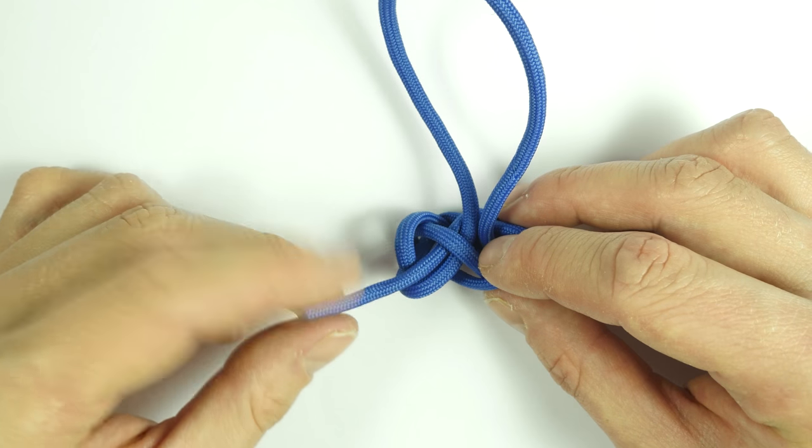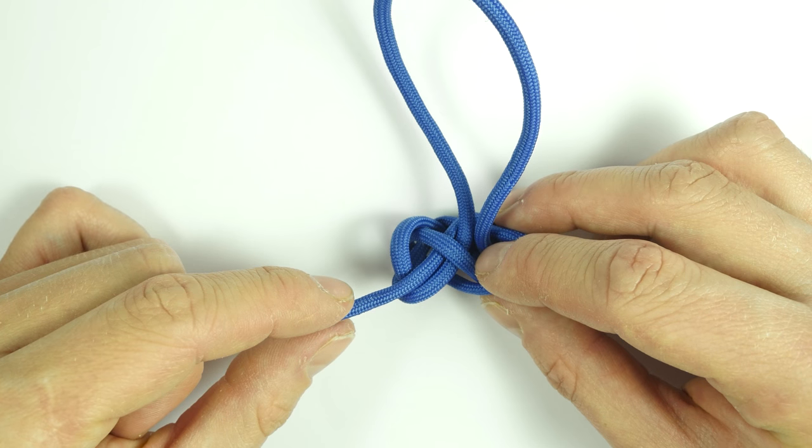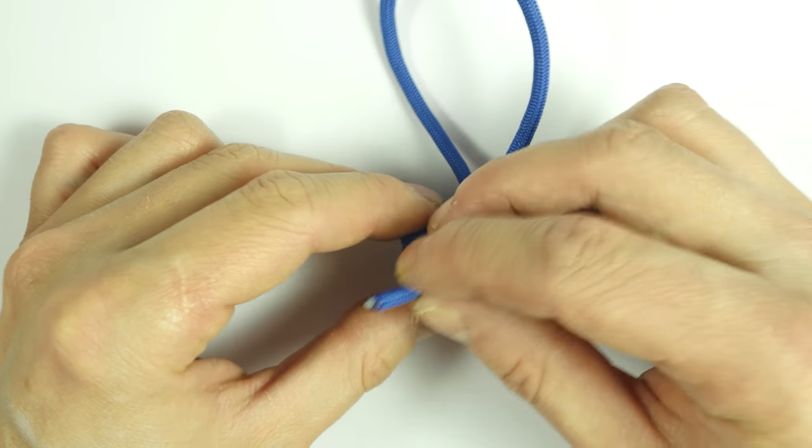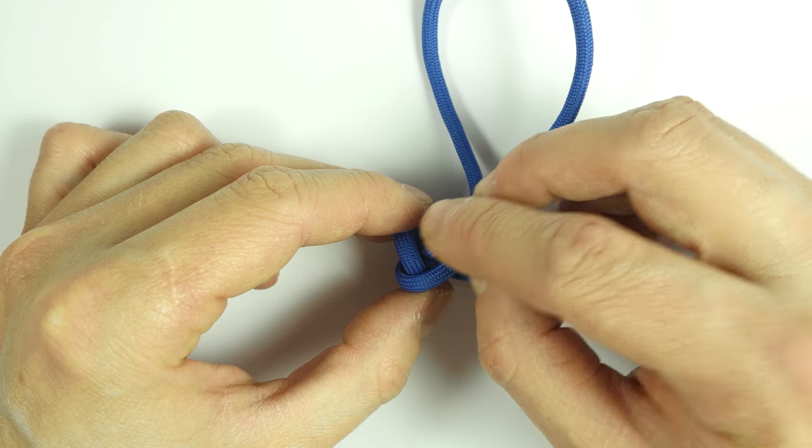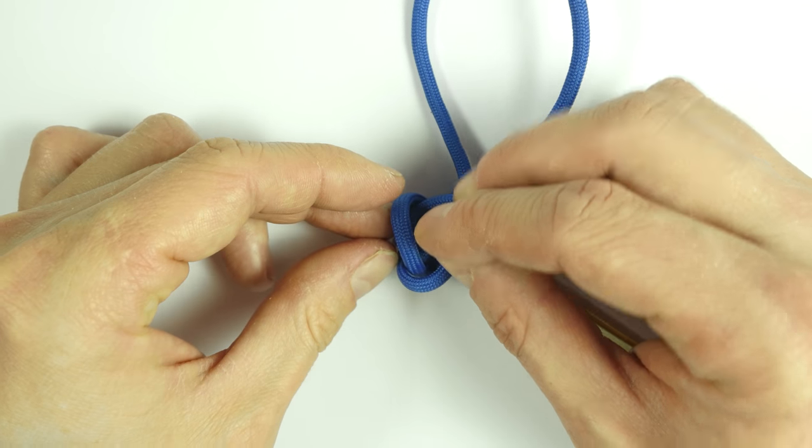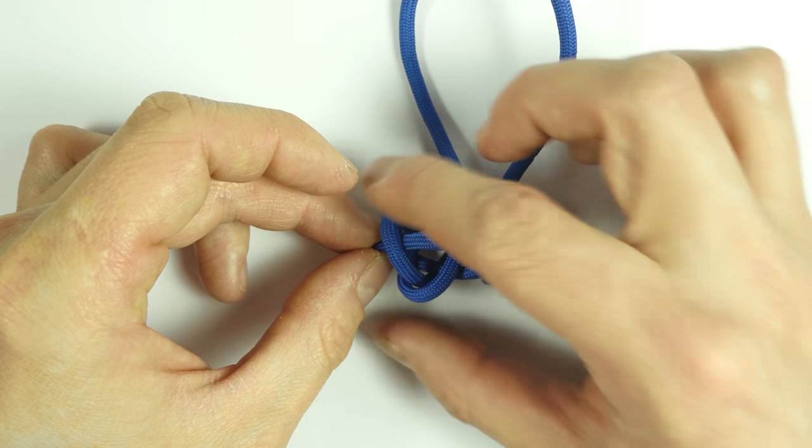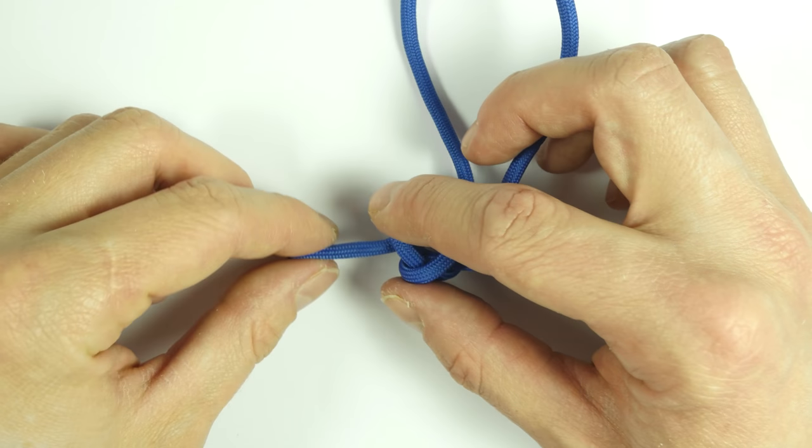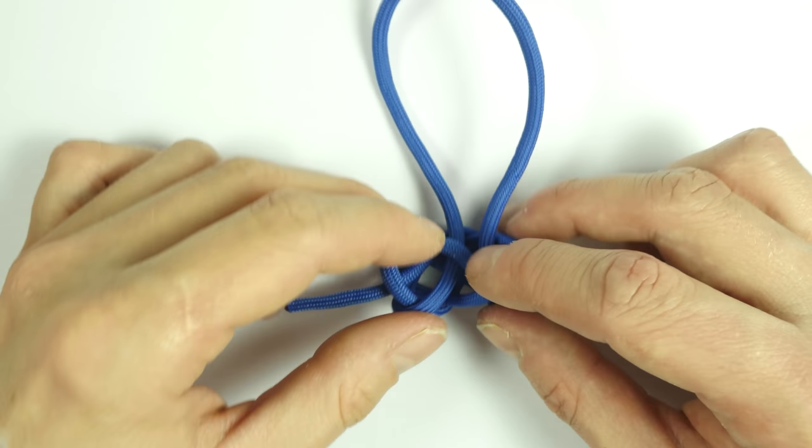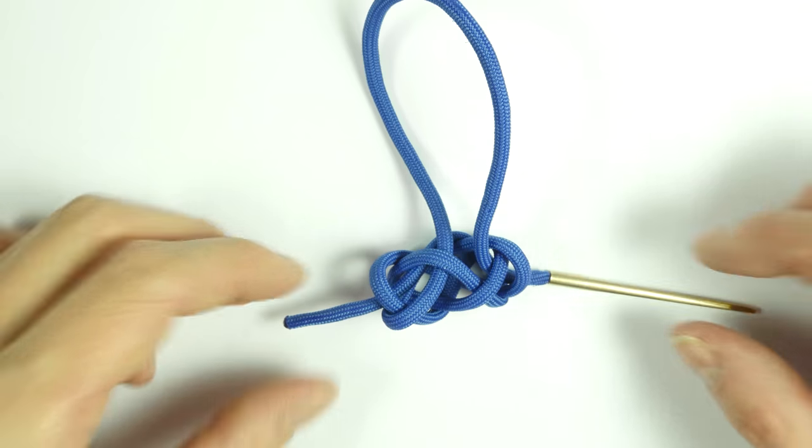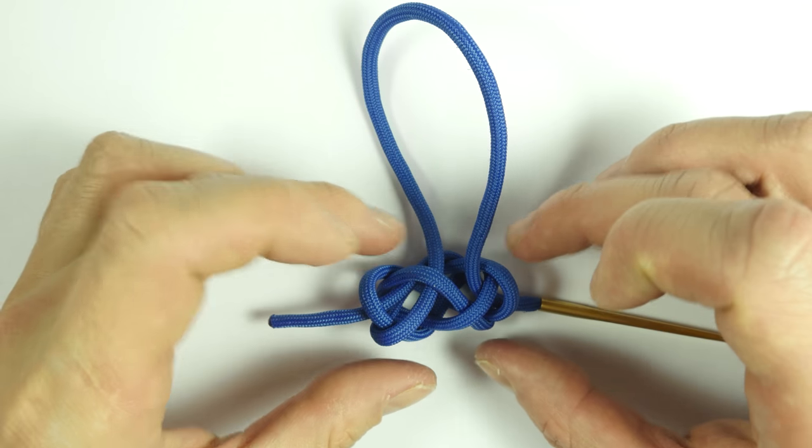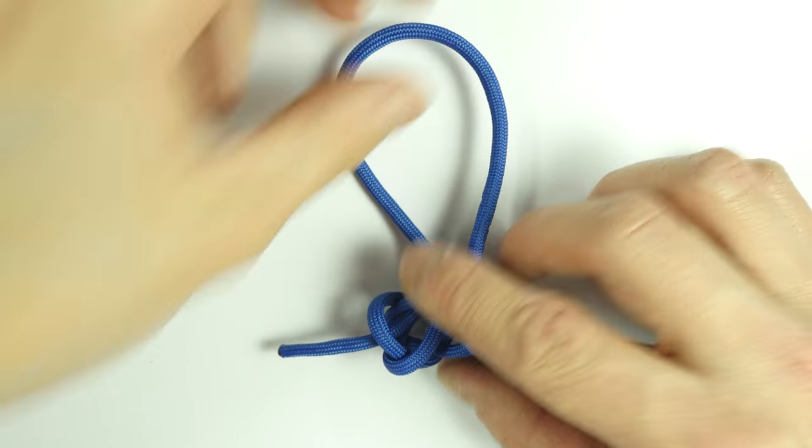Take the left end, so the standing end, place it through the opening where it comes out, and go out through the center of the knot on the left side. And with this we have set up our toggle knot. We have the toggle, and the bight.